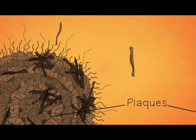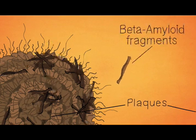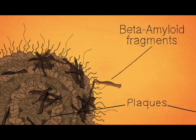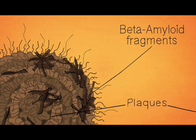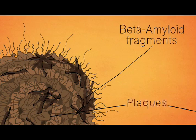These plaques are composed of sticky protein fragments called beta-amyloid, formed by accident when a natural brain protein called APP somehow doesn't dissolve in quite the right way.